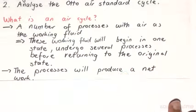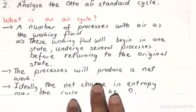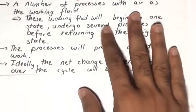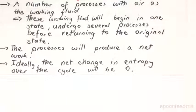These processes will produce a net work and ideally the net change in entropy over the entire cycle will be zero.